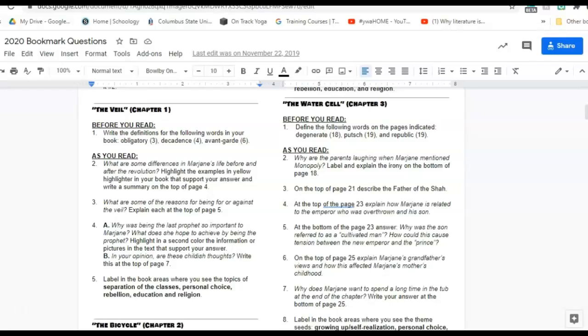Number four tells you to write at the top of page seven. And then number five, at the end of each section, it'll say label in the book areas where you see topics of separation of classes, personal choice, rebellion, education, and religion. For these sections, we are not asking you to explain them. We're just asking you to label them.